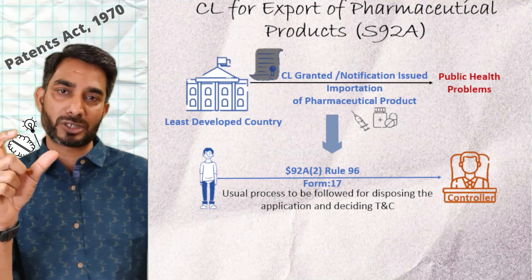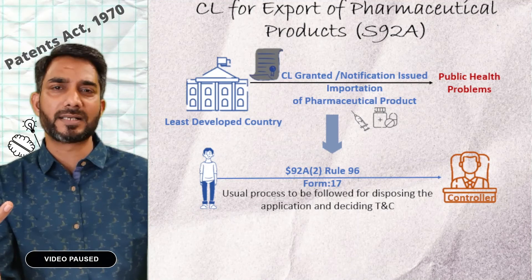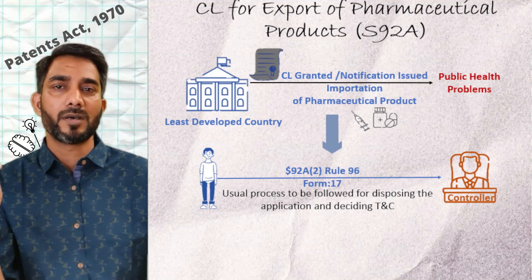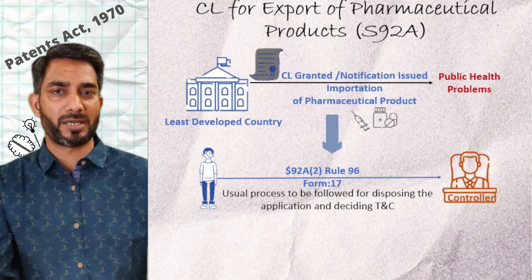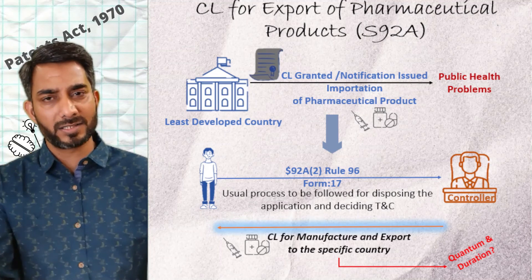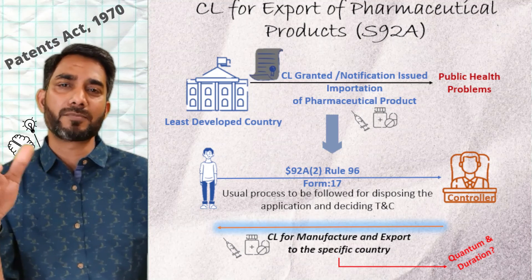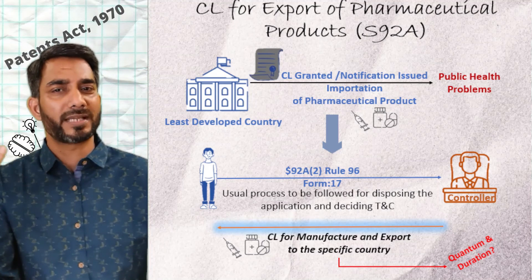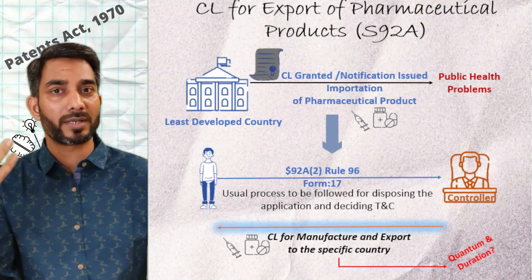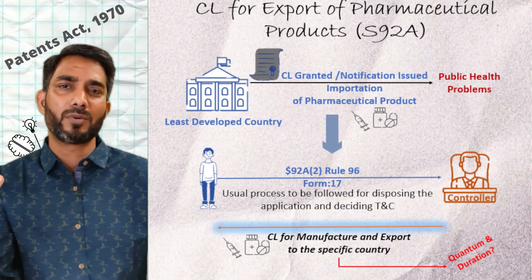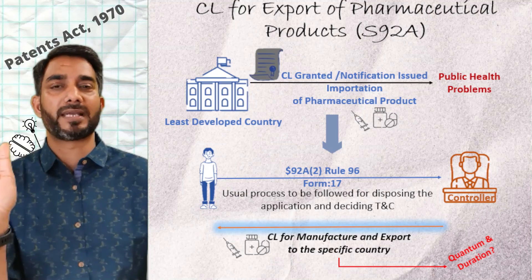When we say pharmaceutical product, these are products related to the pharmaceutical sector, including the final product, ingredients, or diagnostic kits — each of which would be considered a pharmaceutical product. Upon receiving such a request, the controller will grant the CL for exporting the pharmaceutical product. There is no specific guideline on how much can be exported or for how long, but it should be allowed as long as the other country is facing public health problems.